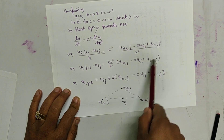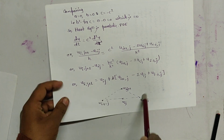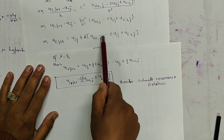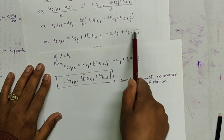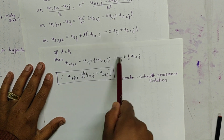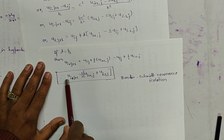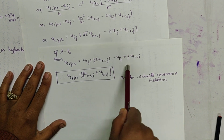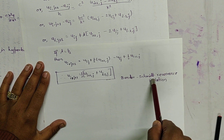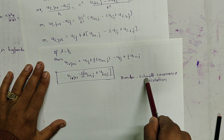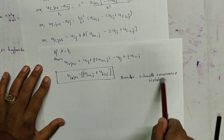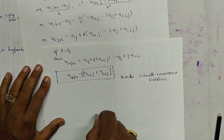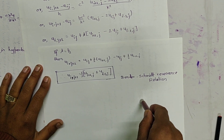This can be geometrically represented. If lambda = 1/2, then the expression simplifies: 1/2 multiplied by 2 gives 1, and the u(i,j) terms cancel. The resulting equation is u(i, j+1) = u(i+1, j) + u(i-1, j), which is known as the Bender-Schmidt recurrence relation. We will be using this recurrence relation in numerical methods.